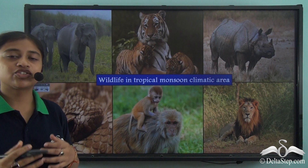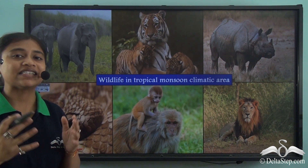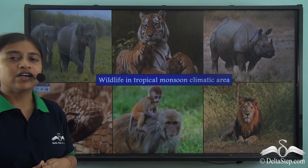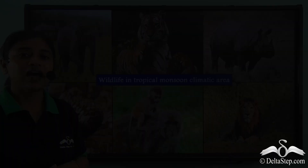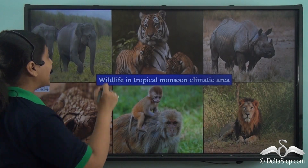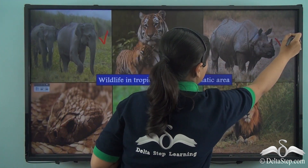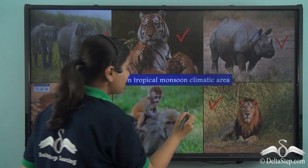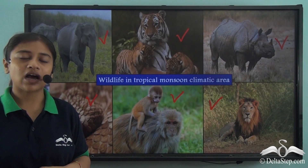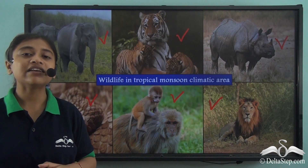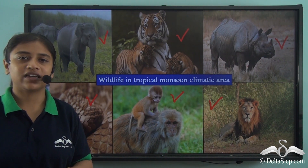The tropical monsoon climate also supports quite interesting wildlife. Regions experiencing the tropical monsoon climate are home to elephants, tigers, rhinoceros, Asiatic lion, monkeys, and snakes — these are the most commonly found animals in regions experiencing tropical monsoon climate.